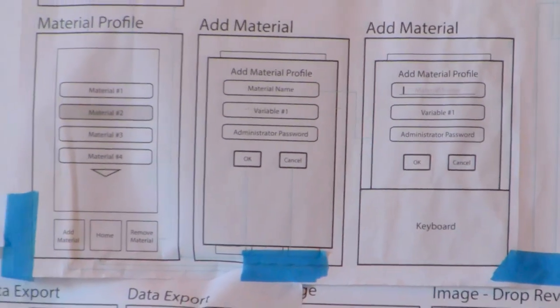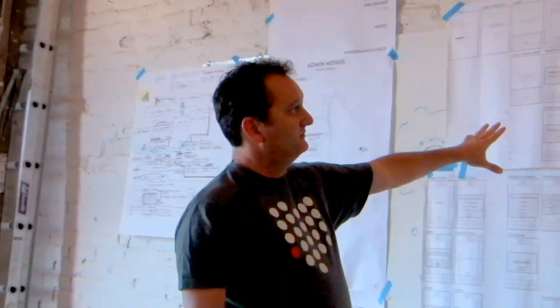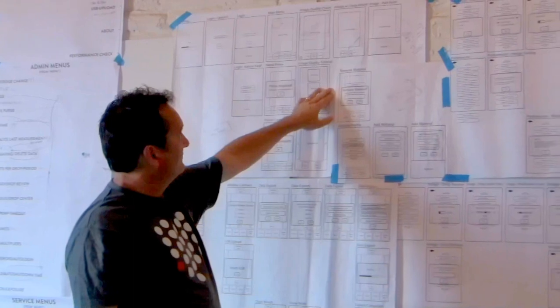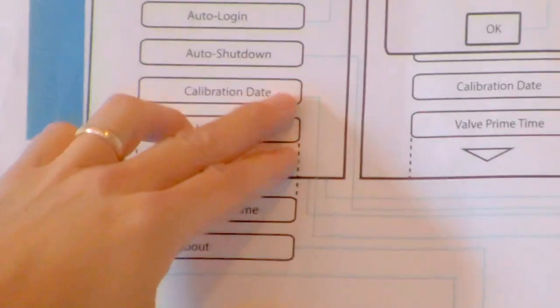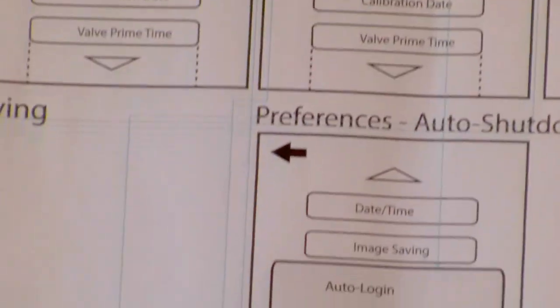Each one of these rectangles is the actual size of the monitor we're going to be using for the product. So we're looking a little bit at ergonomics, a little bit at space and layout, but really we're looking at that workflow and how it all comes together. Each one of these blue lines has a relationship attached to it — so if I hit this auto shutdown it's going to come over to another related component in the GUI.